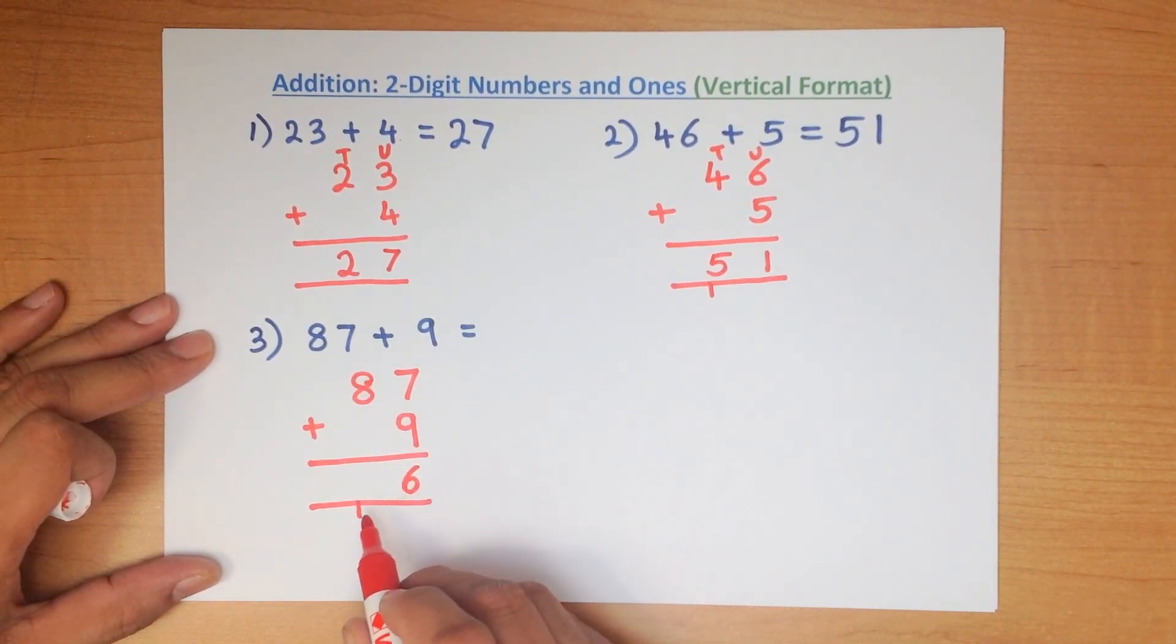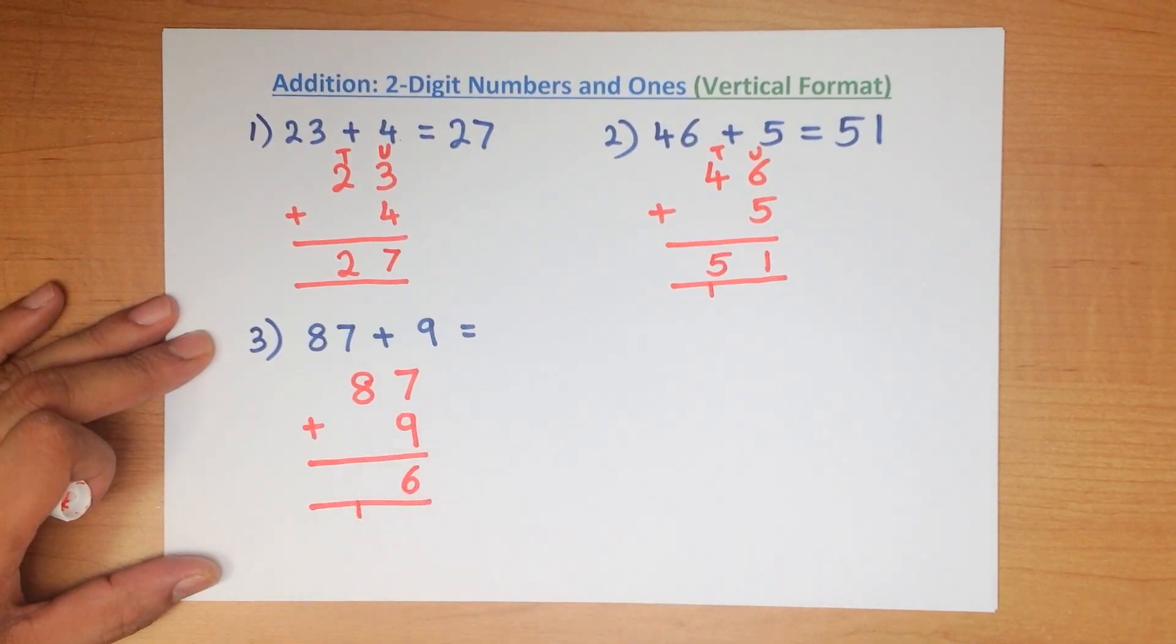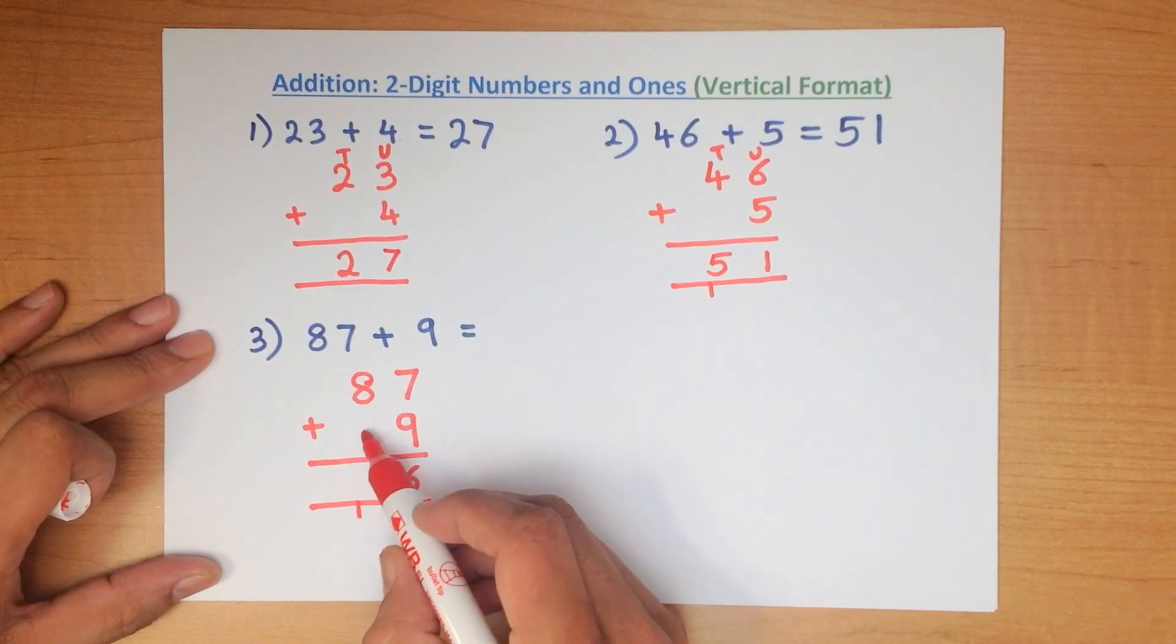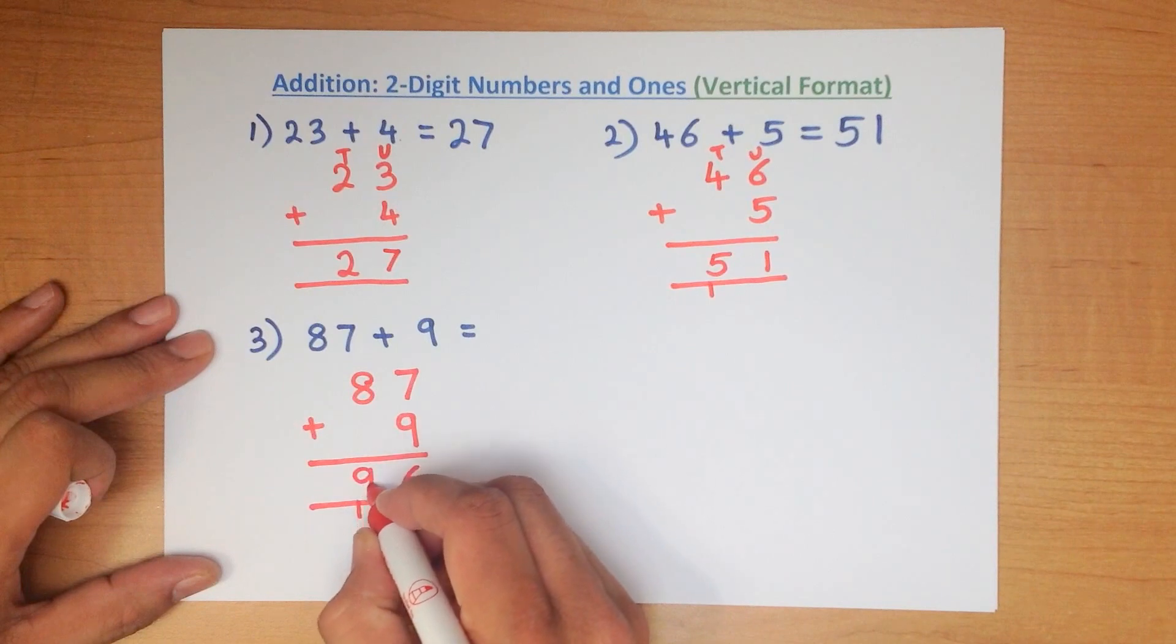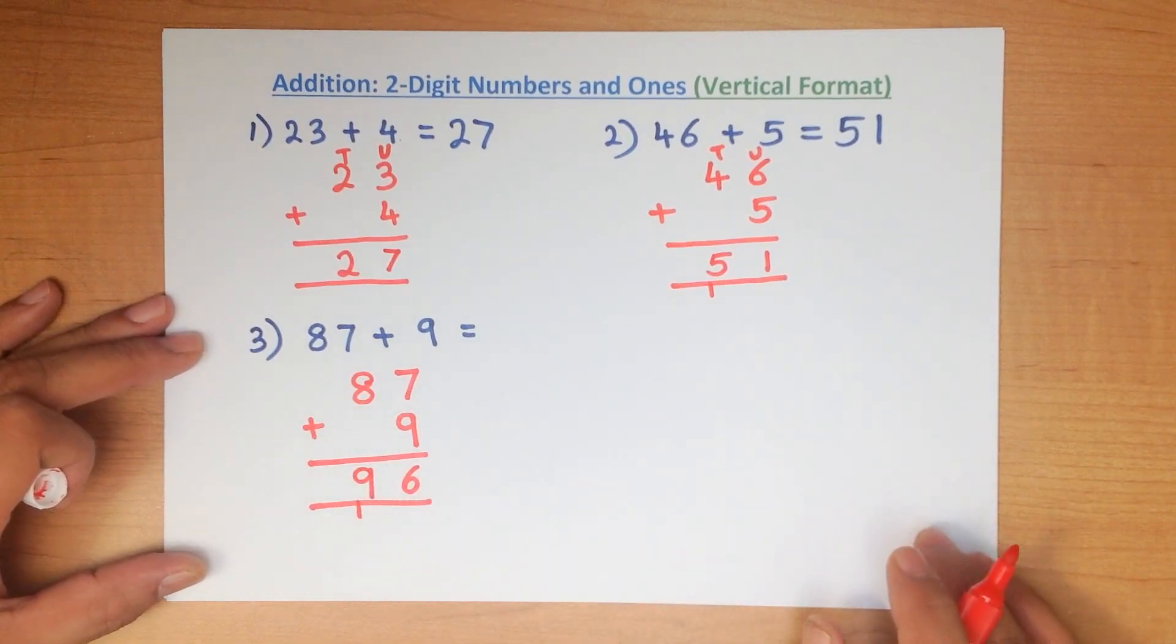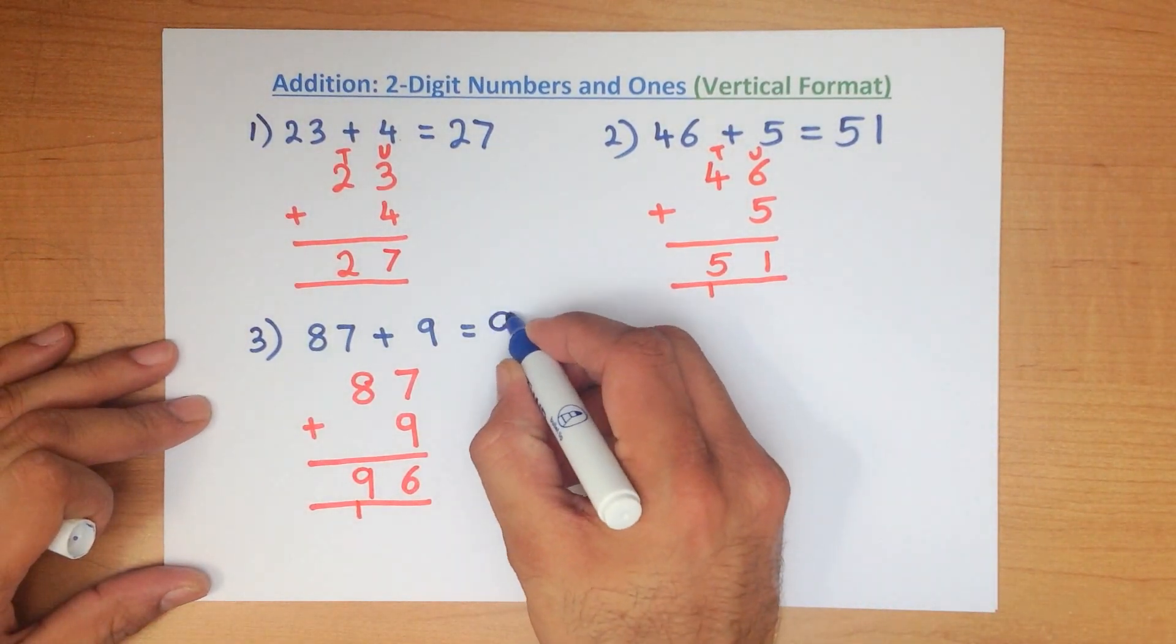So we've added the units and now we are going to add the tens. What is 8 plus 1? Don't forget there's nothing here. 8 plus 1 is 9. And we have our answer. 87 plus 9 is 96.